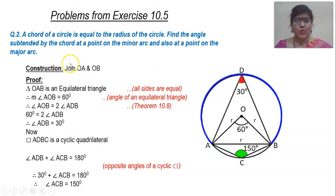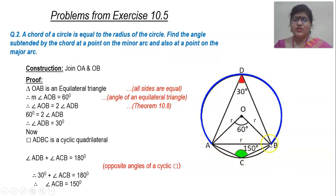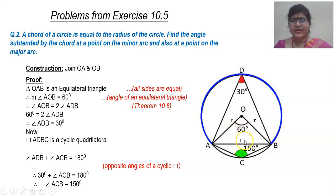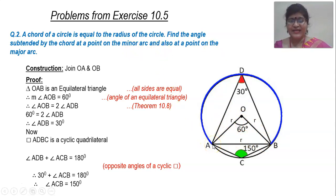This is the second question of exercise 10.5, and it is quite an important question. There is a chord on the circle; I have taken chord AB. The length of this chord is equal to the radius of the circle. So let us assume AB equals R, where R represents the radius. OA and OB are also radii, so these three sides become congruent — each represented by R — giving us triangle AOB as an equilateral triangle. They have asked us to find the measure of angle ADB in the major arc and angle ACB in the minor arc.